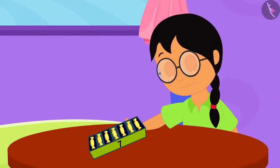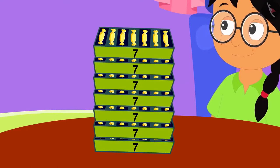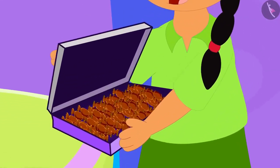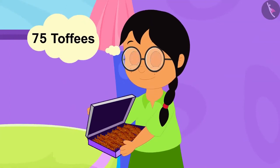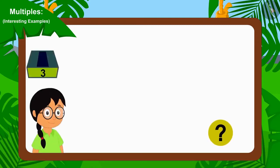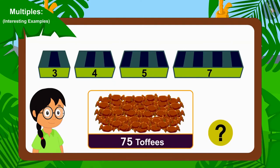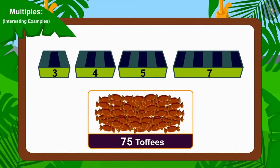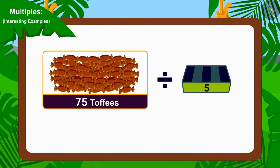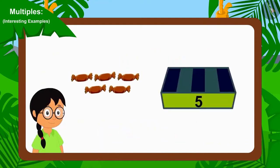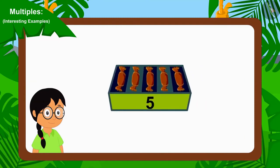Meenu quickly made groups of 7 toffees and filled 49 toffees in 7 boxes. Now, Meenu opened a chocolate toffee packet brought by her uncle. She found 75 toffees in this packet. Can you tell which of the groups of 3, 4, 5 or 7 can Meenu use to distribute these 75 chocolate toffees equally? We can divide 75 by 5. In other words, 75 is a multiple of 5. Therefore, by forming a group of 5 toffees, Meenu can divide these toffees equally among her friends.